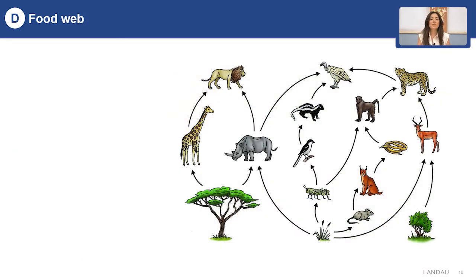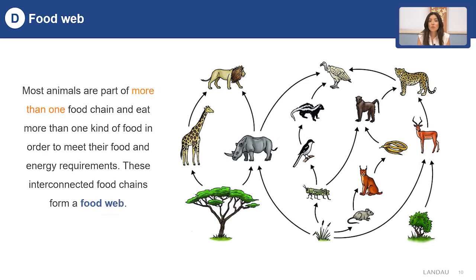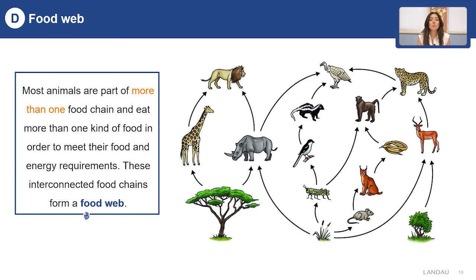Now let's talk about the most interesting part: the food web. What is the food web? Most animals are part of more than one food chain and eat more than one kind of food in order to meet their food and energy needs. These interconnected food chains form a food web.